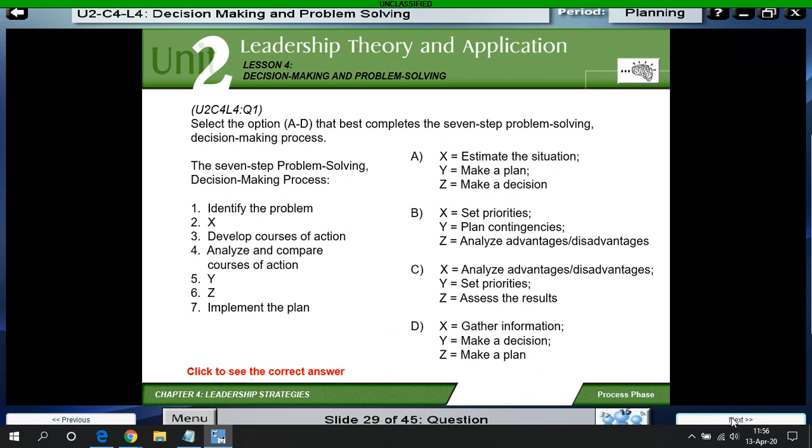This is a right or wrong answer. So pause, pick the correct answer, and then I'll select it to show you which one it was. Here's the correct answer: D, we gather information, make a decision, make a plan.